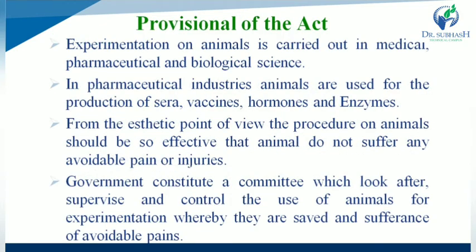Next: Provisions of the Act. Experimentation on animals is carried out in medical, pharmaceutical, and biological sciences. In pharmaceutical industries, animals are used for the production of sera, vaccines, hormones, and enzymes. From the ethical point of view, procedures on animals should be so effective that the animal does not suffer any avoidable pain or injury.